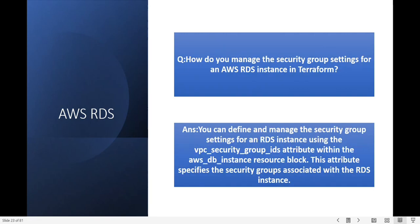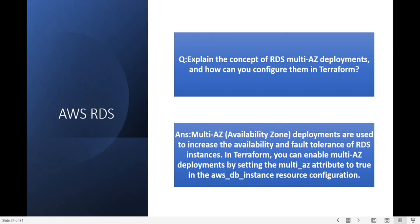Next question: how do you manage security group settings for AWS RDS instances in Terraform? You can manage security groups by using the vpc_security_group_ids attribute within the AWS DB instance block. This attribute specifies the security groups associated with the RDS instance.